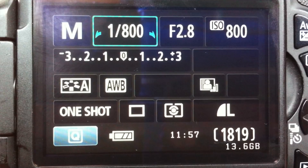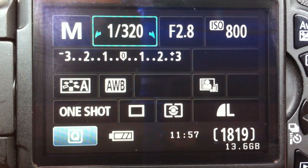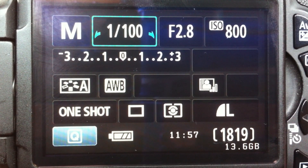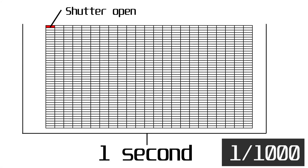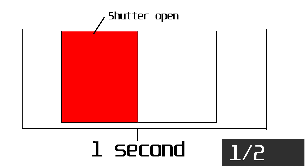Welcome to this DSLR tutorial. Today I will talk about the shutter speed. The shutter speed is the time the shutter opens to let light to the sensor. One sixtieth, for example, means that if you divide one second into sixty parts, one of those sixty parts the shutter would be open. One thousandth would be super short, and a half means that the shutter is half a second open.